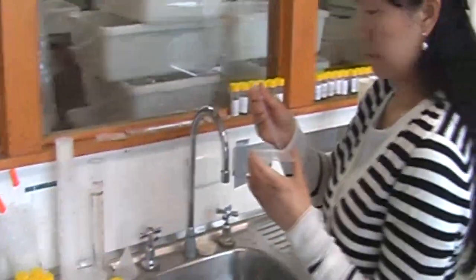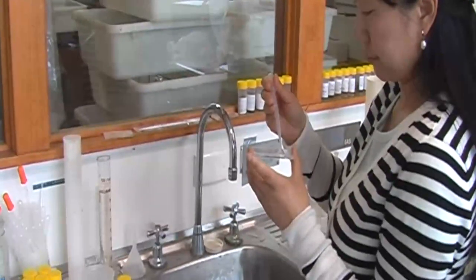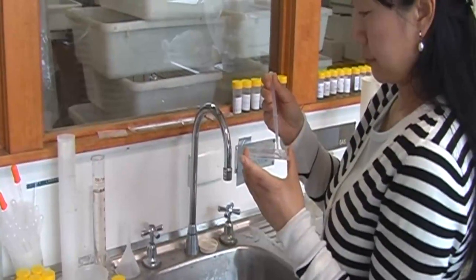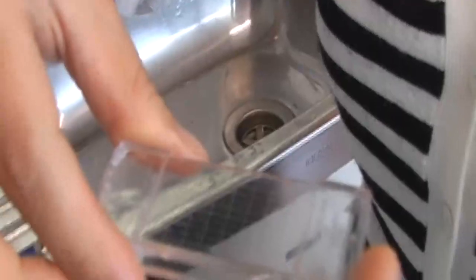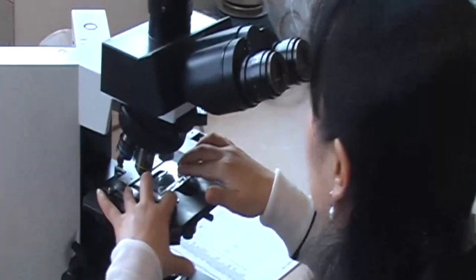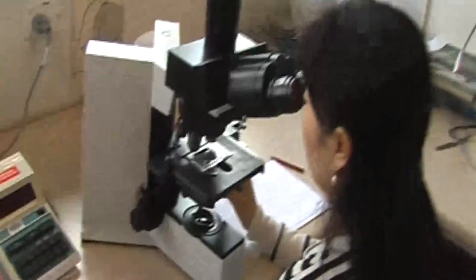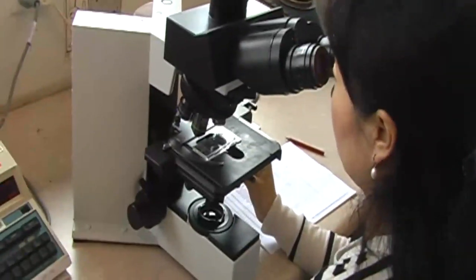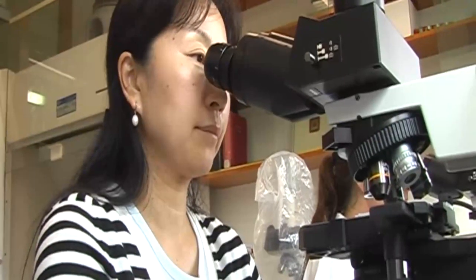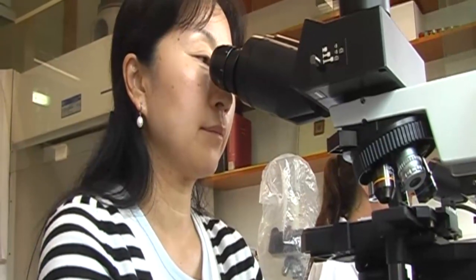Jean will take 1 mL from this and she'll put it onto a Horsley slide, which is a plastic slide that has a 24 cell grid. And she'll be able to count the number of nematodes under the microscope. And from that number, we can calculate how many nematodes per kilogram of soil were in this sample.